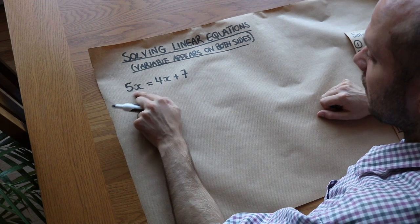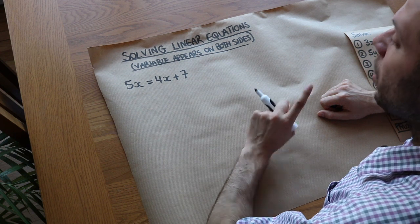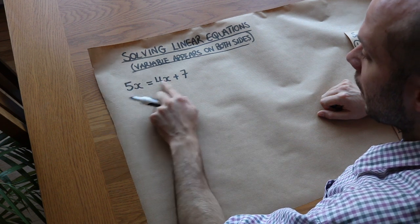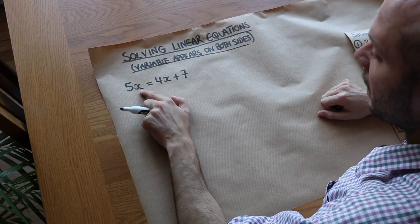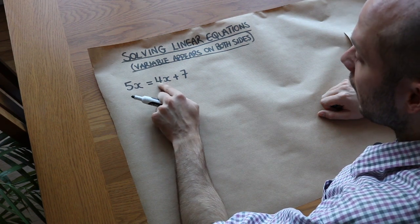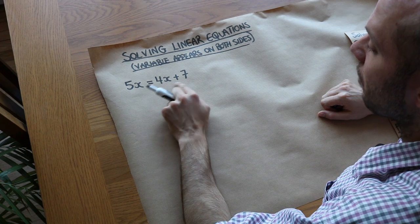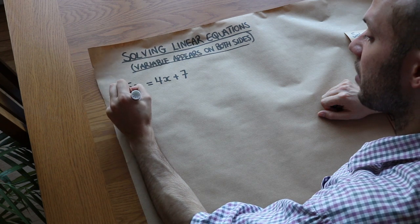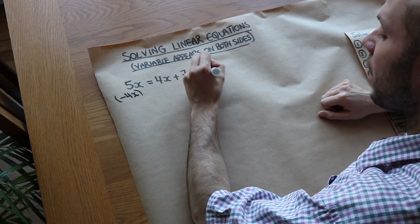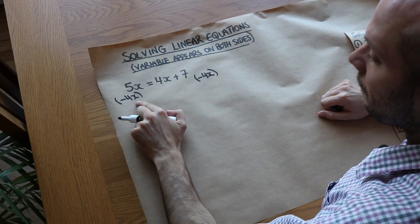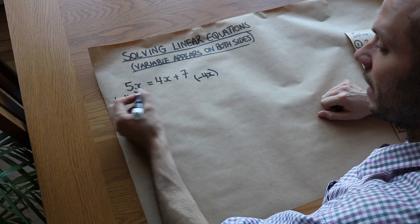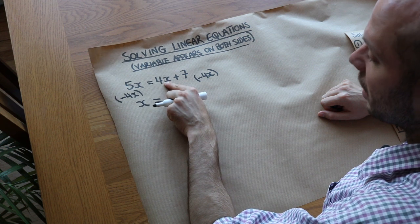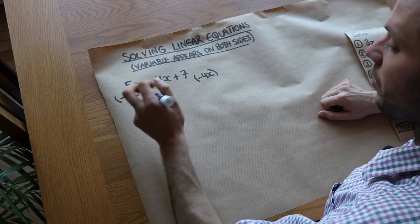We've got 5x on the left hand side and 4x on the right hand side. You collect on the side where there are more x's to make it easiest. 5x is clearly bigger than 4x, so we want to get rid of that 4x. Since we're adding 4x, the opposite is to subtract 4x from both sides. So 5x minus 4x gives just x, and on the other side the 4x terms cancel, leaving just 7.